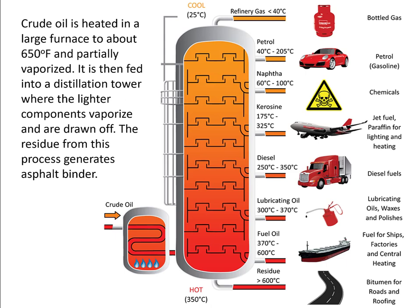This figure shows the fractional distillation process. Crude oil is heated in a large furnace to about 650 degrees Fahrenheit and partially vaporized. It's then fed into a distillation tower where the lighter components vaporize and are drawn off. The residue from this process generates asphalt binder.